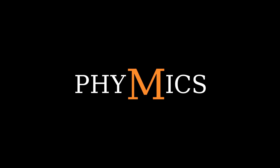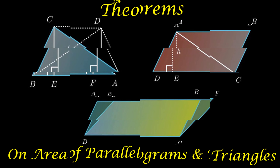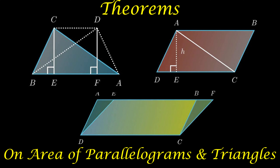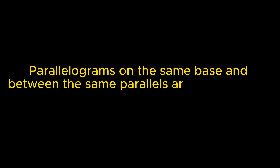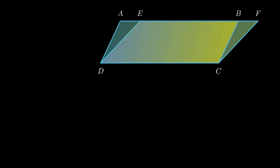In this video, we will understand the terms related to the areas of parallelograms and triangles. Theorem 1 states that parallelograms on the same base and between the same parallels are equal in area. Consider two parallelograms ABCD and EFCD on the same base CD. We need to prove that the areas of these two parallelograms are equal.